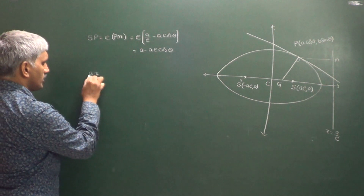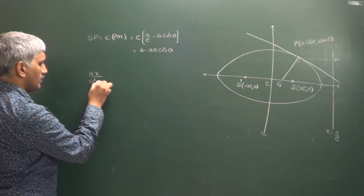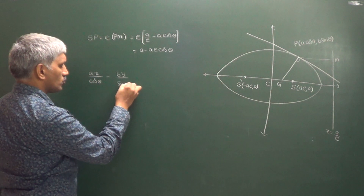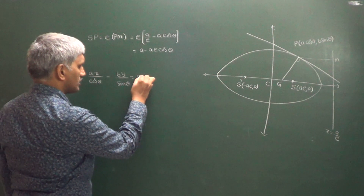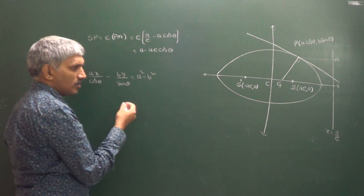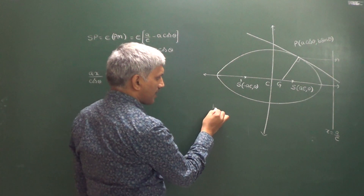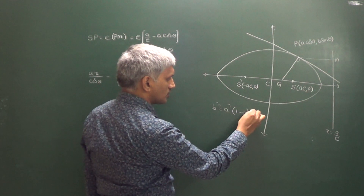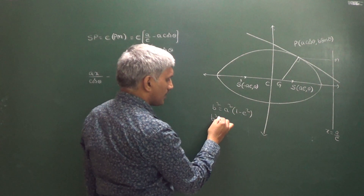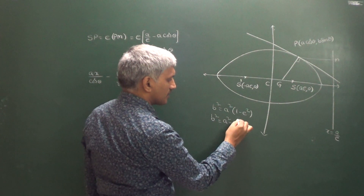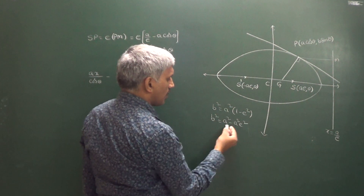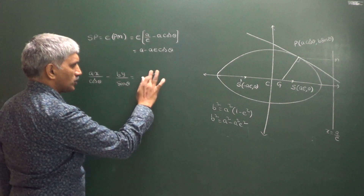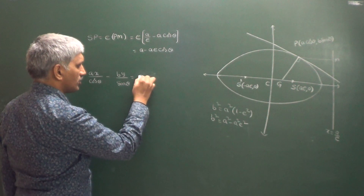Now observe the equation of the normal: (AX cosθ)/1 minus (BY)/sinθ equals A² minus B². We can write A² minus B² since B² = A²(1 - E²), which gives B² = A² - A²E². Therefore A² minus B² equals A²E², so we replace that term with A²E².